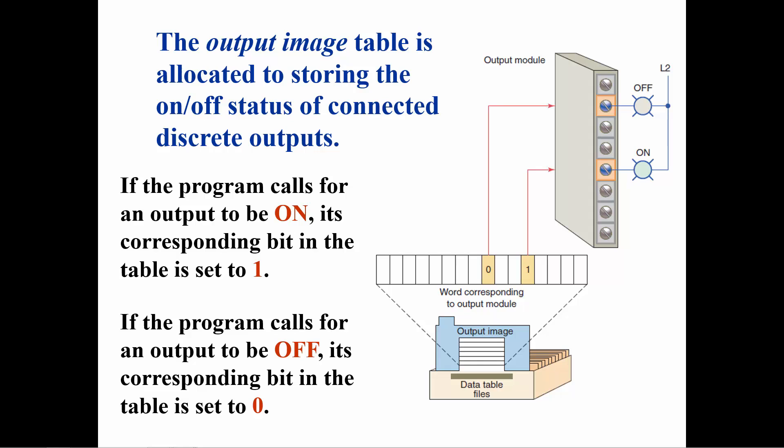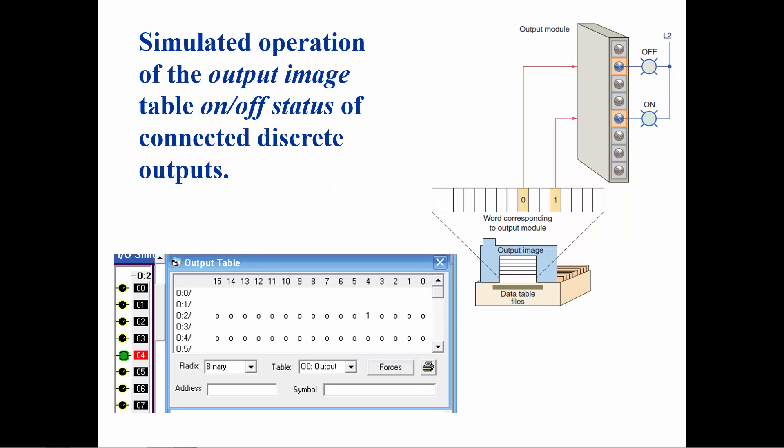When there is a 0 in the output table the output will be turned off. When there is a 1 in the output table the output will be turned on. When there is a 1 in O colon 2 slash 4 the output is on and when there is a 0 the output is off. The same is true for O colon 2 slash 7.